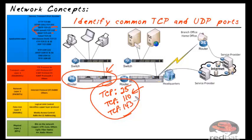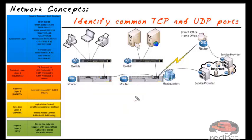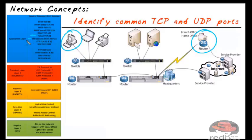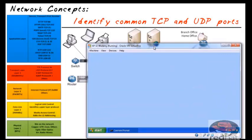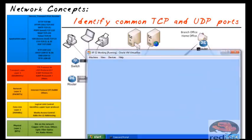Let's say you and I are managing a branch office router, but we are at headquarters. How do we get to that router to manage it? We can use a remote access protocol — there are two primary ones: Telnet and SSH. Let's say we're sitting at the PC on the far left and want to run Telnet to talk to this router. The IP address of the router is 192.168.0.3.